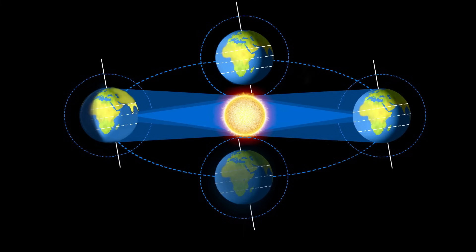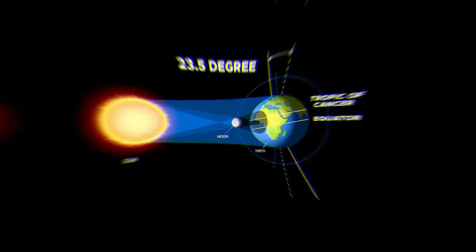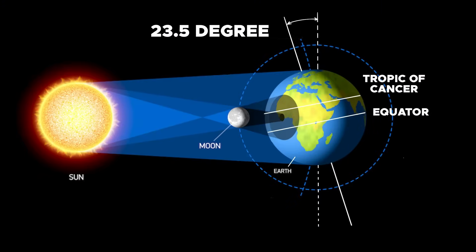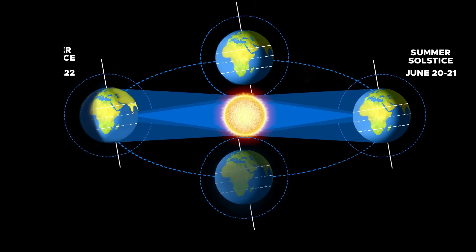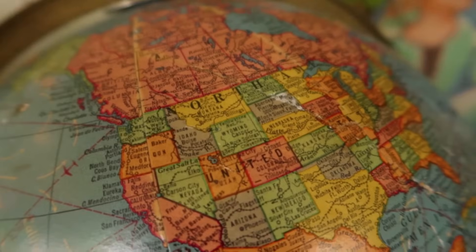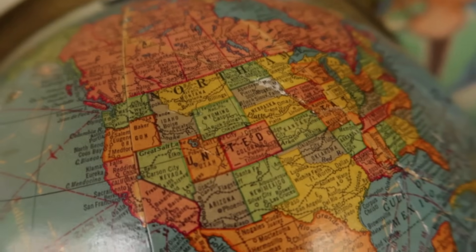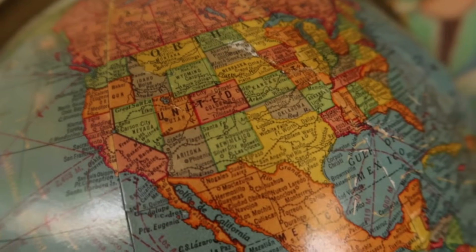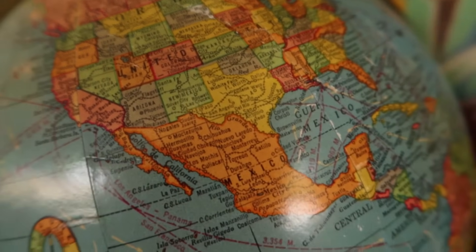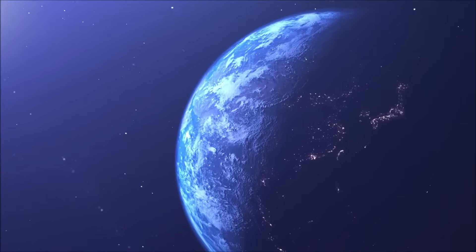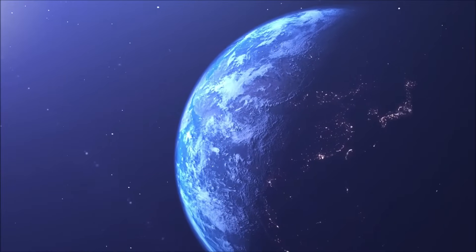Sun rays hit the Tropic of Cancer vertically on the 21st of June every year. The corresponding latitude in the southern hemisphere is called the Tropic of Capricorn, which receives vertical solar rays on the 22nd of December every year. If you look at a map or globe, you can see these latitudes are marked at 23.5 degrees, equal to the amount of Earth's tilt to the vertical axis.